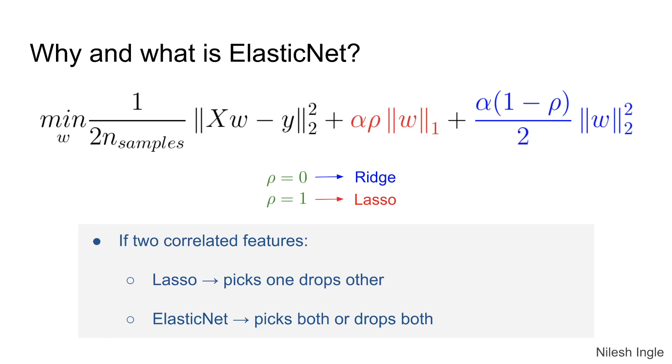And as we have seen in previous cases, if there are two correlated features then lasso would tend to drop one of the features completely by setting the parameters to zero. Whereas in case of ElasticNet, it can pick either both the features or it can drop both the features.